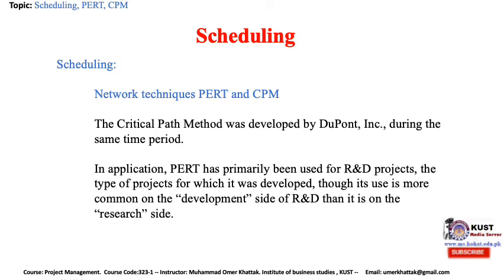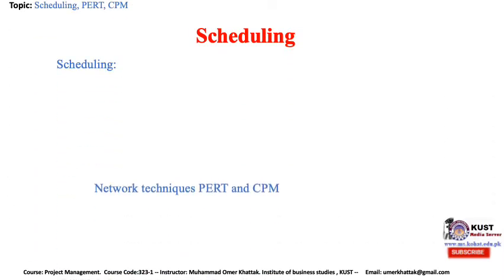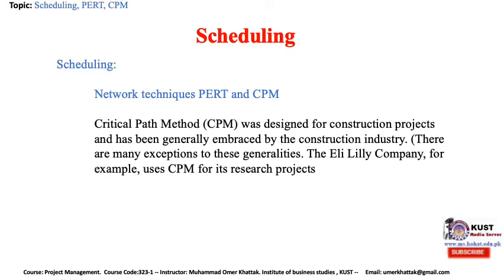In application, PERT has primarily been used for research and development projects — the type of projects for which it was developed — though its use is more common on the development side of R&D than on the research side. The Critical Path Method was designed for construction projects and has been largely embraced by the construction industry. There are many exceptions to these generalities; for example, some companies use CPM for their research projects. The use of PERT has decreased sharply in recent years because a large majority of project management software generates CPM networks.